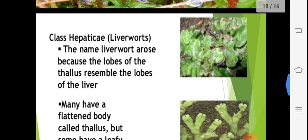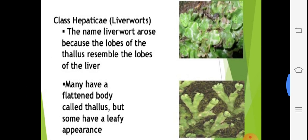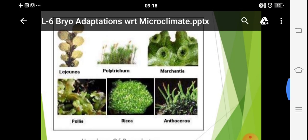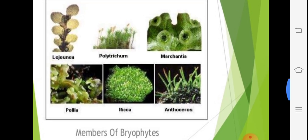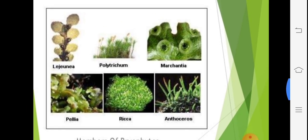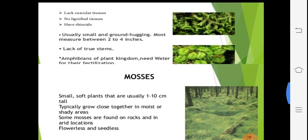Some hepatic members — liverworts such as Marchantia — have sturdy thalli, and some grow at high altitudes. Marchantia is found more than 5,000 feet above sea level. Liverworts also include leafy forms. Conocephalum is a thalloid member. Some mosses and hepatics such as Marchantia show gemmae cups. Anthoceros and these other types are members of this group.